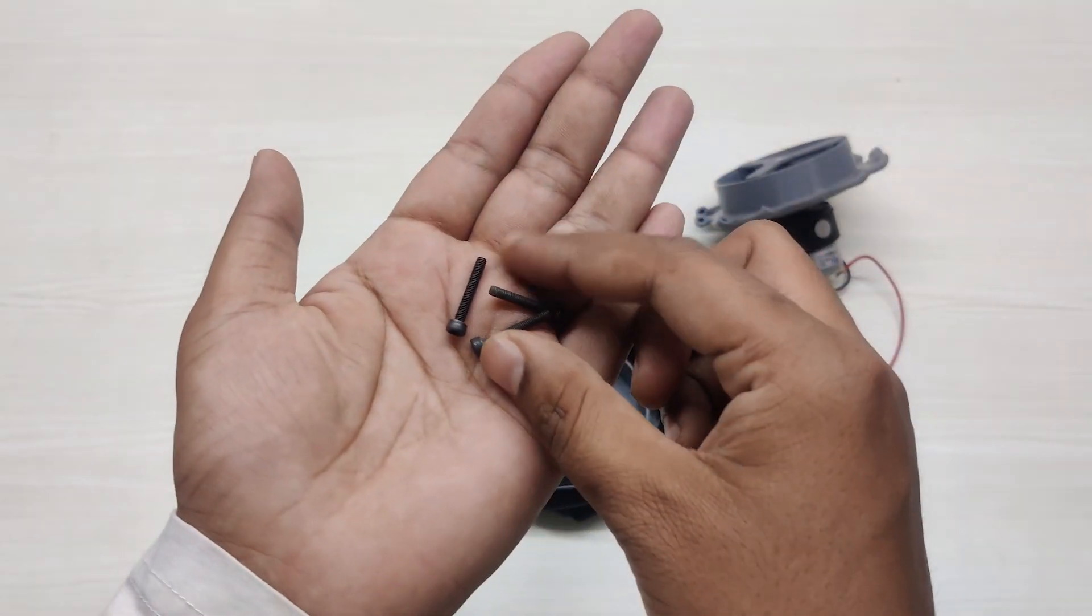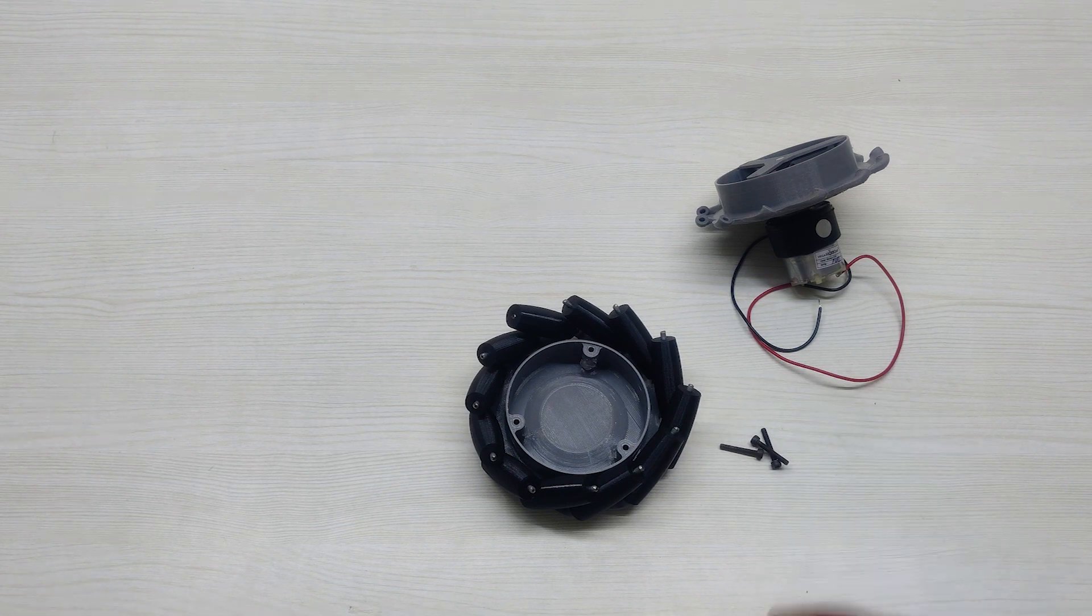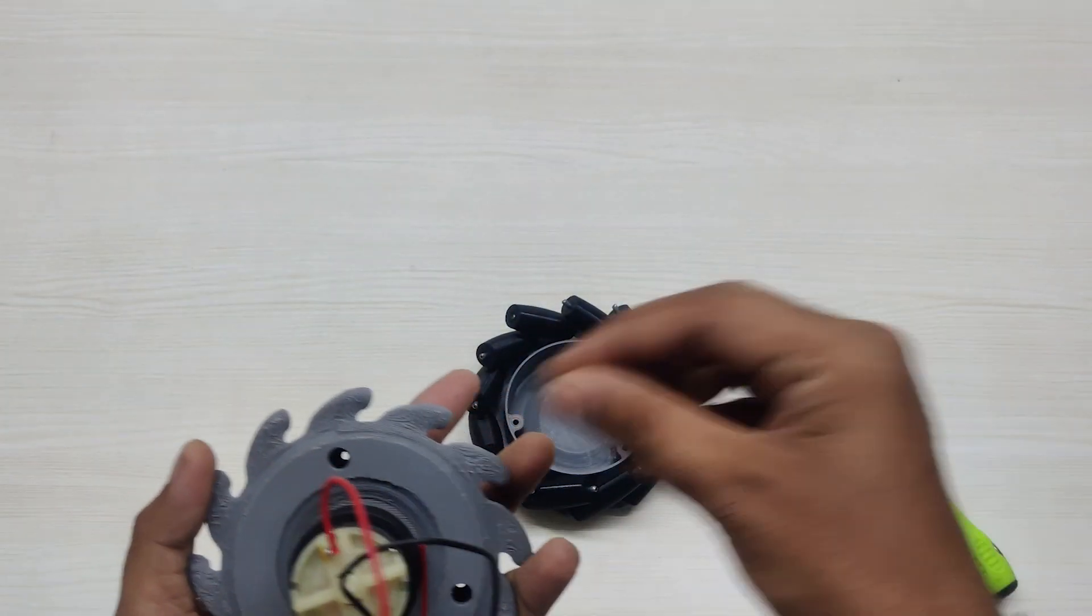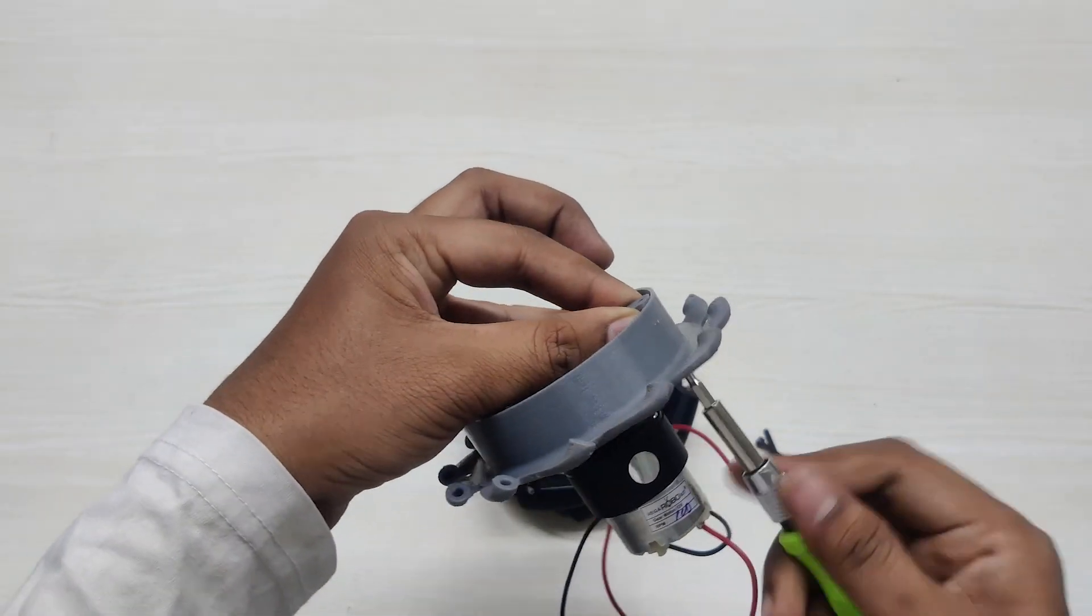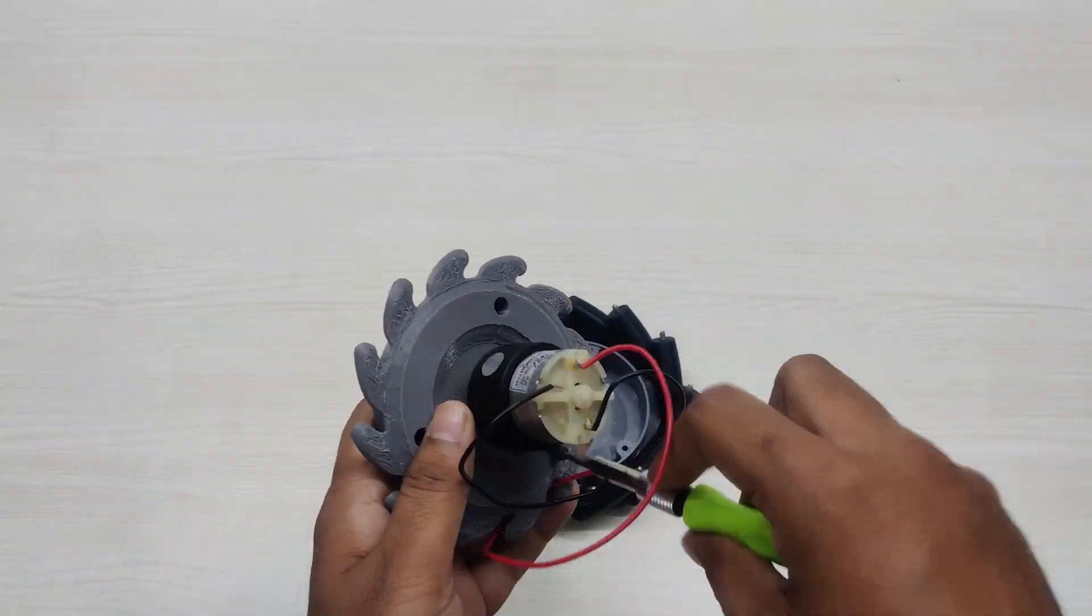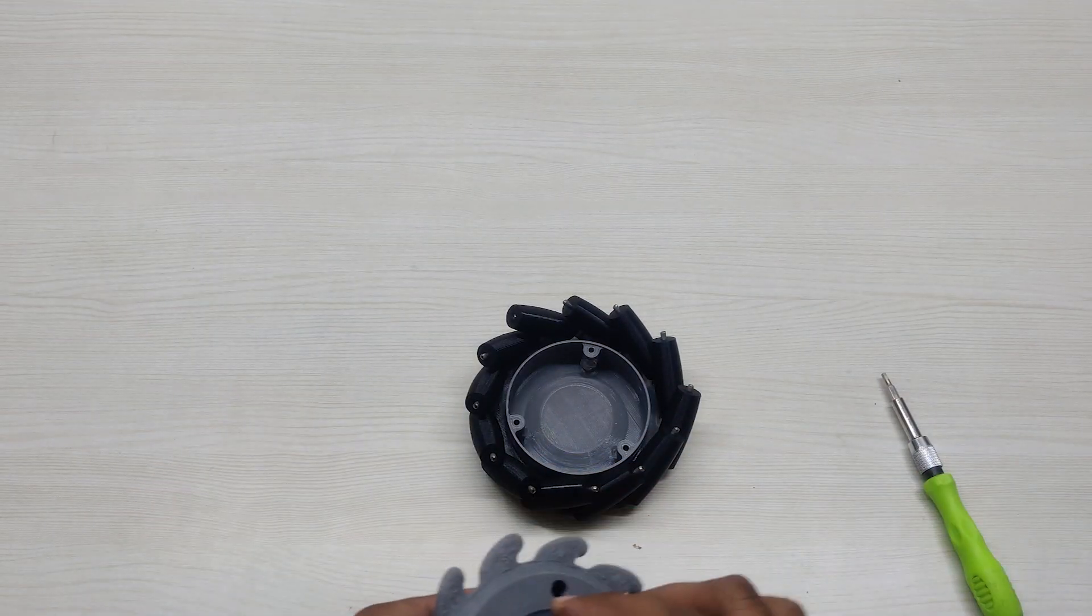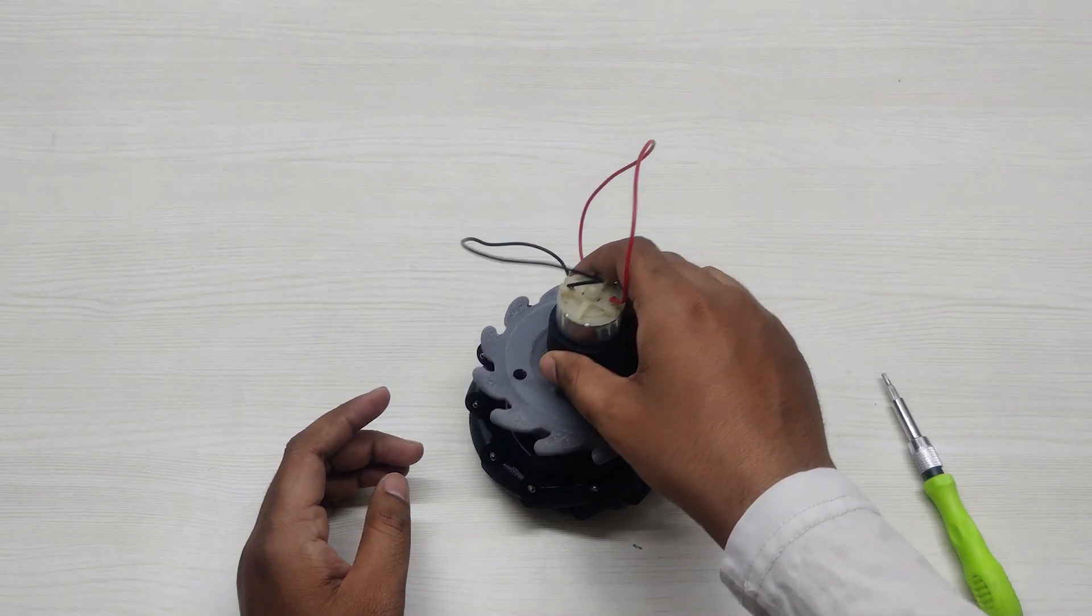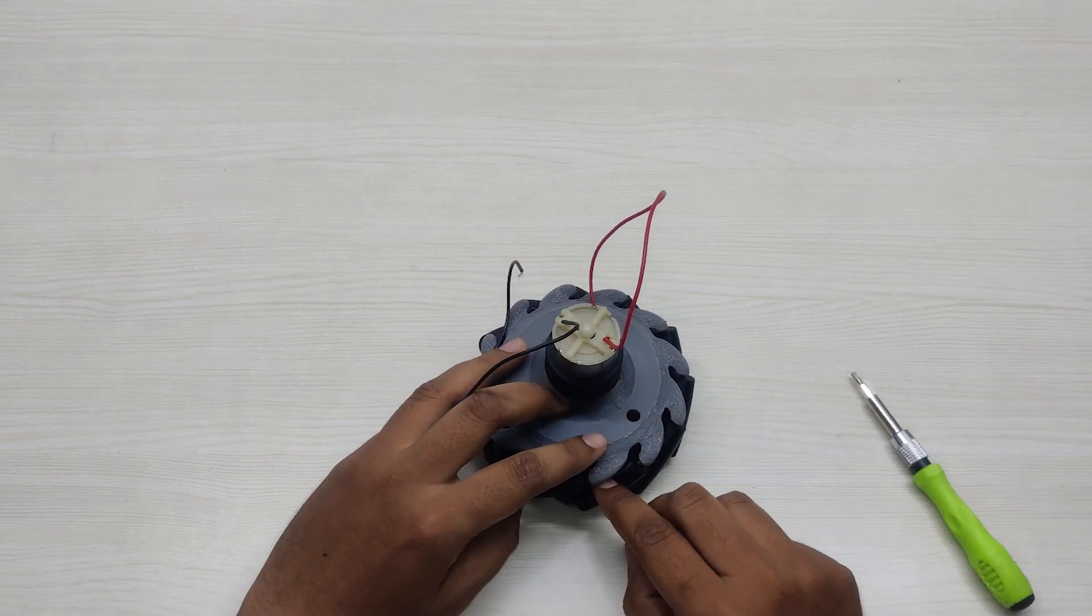Now take three M3 size screws of 20mm length and insert it in the bottom part. Now carefully place this bottom part above the top part while maintaining the alignment of the holes, and then slightly tighten the screws. But make sure not to completely tighten the screws.